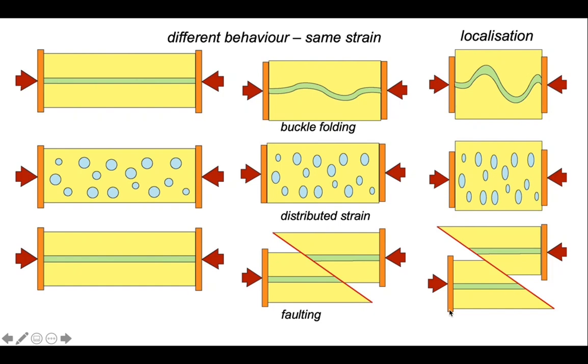In the faulting model at the bottom, the fault forms and then the amount of displacement on the fault increases as the deformation continues. We can quantify the strain if we know what the rocks looked like before the deformation occurred.